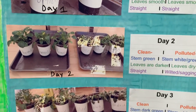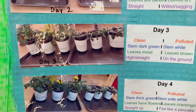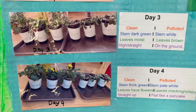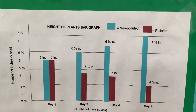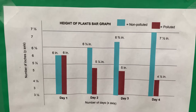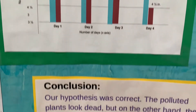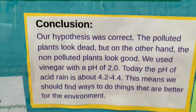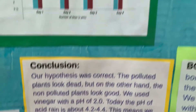In the end, our hypothesis was correct. The polluted plants look dead, but on the other hand, the non-polluted plants look good. We used vinegar with a pH of 2.0. Today, the pH of acid rain is about 4.2 to 4.4.